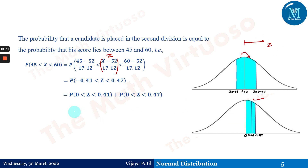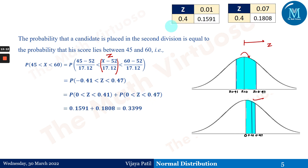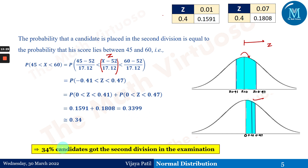Using symmetricity and the table values for positive Z, this becomes P(0 < Z < 0.41) + P(0 < Z < 0.47) = 0.1591 + 0.1808 = 0.3399, approximately 0.34. So 34% of candidates are placed in the second division.